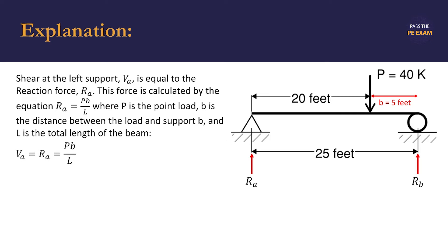Writing the equation out, we substitute our known values: 40 kips for P, 5 feet for B, and 25 feet for L. We find that the reaction force at support A is 8 kips.